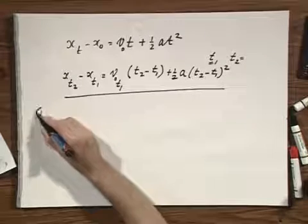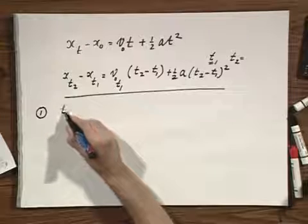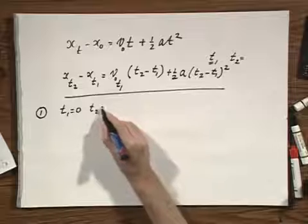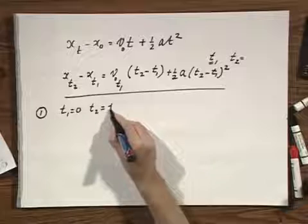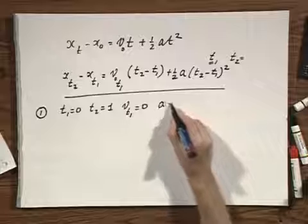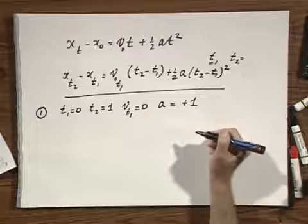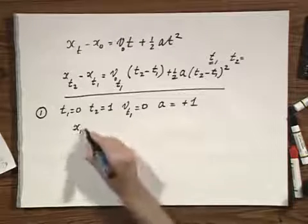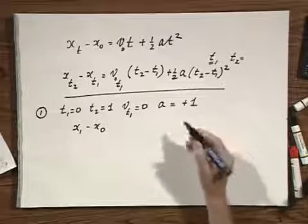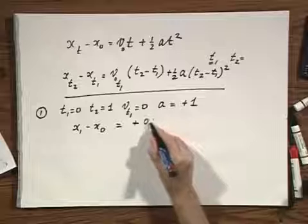If I now look at the first second, then t_1 equals 0, t_2 equals 1, v at t_1 equals 0, and a equals plus 1. If you calculate x_1 minus x_0 using this equation, you find plus 0.5 meters.